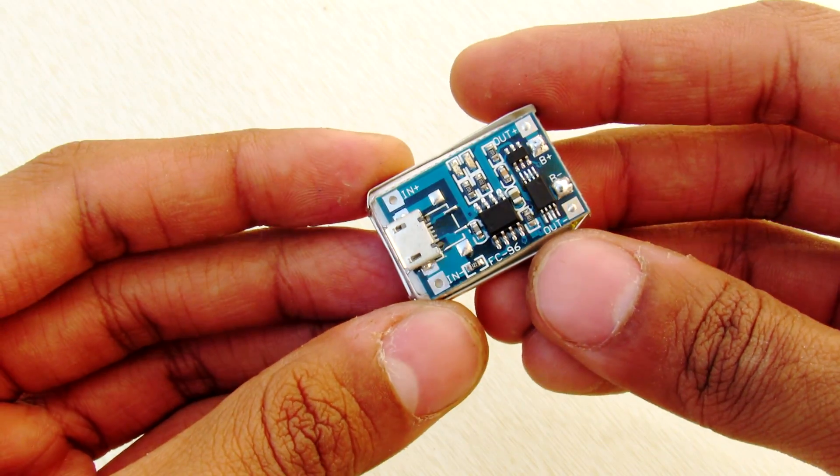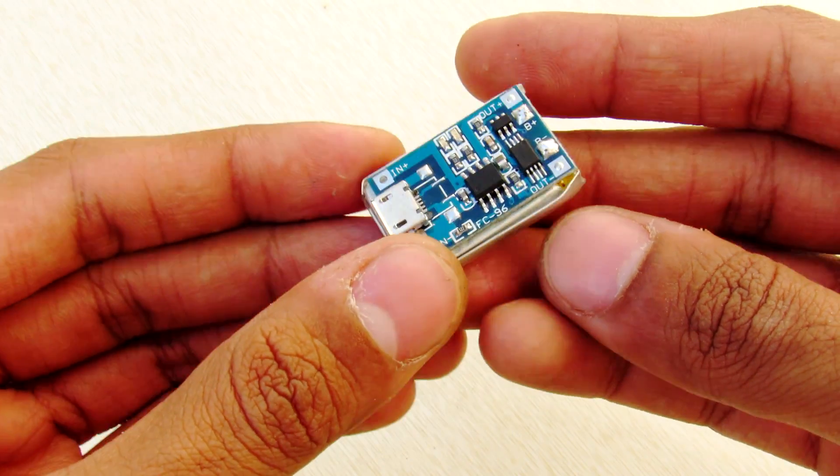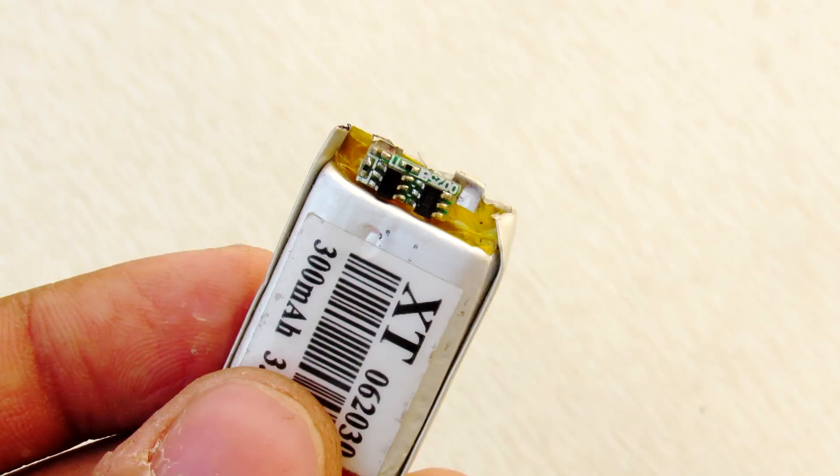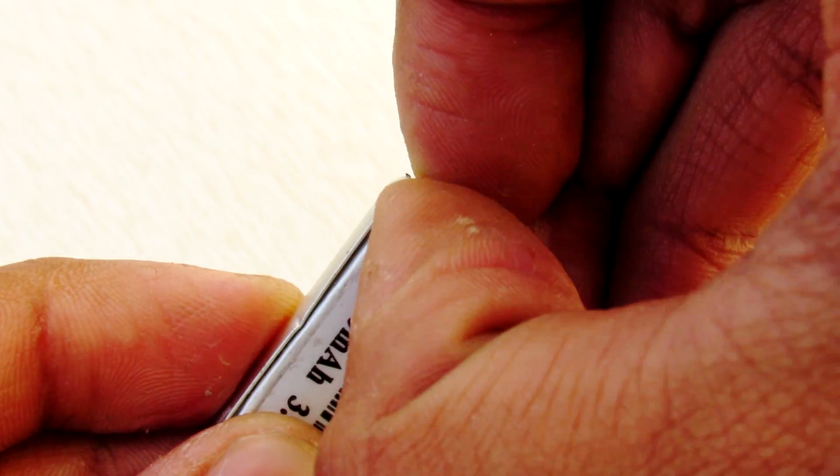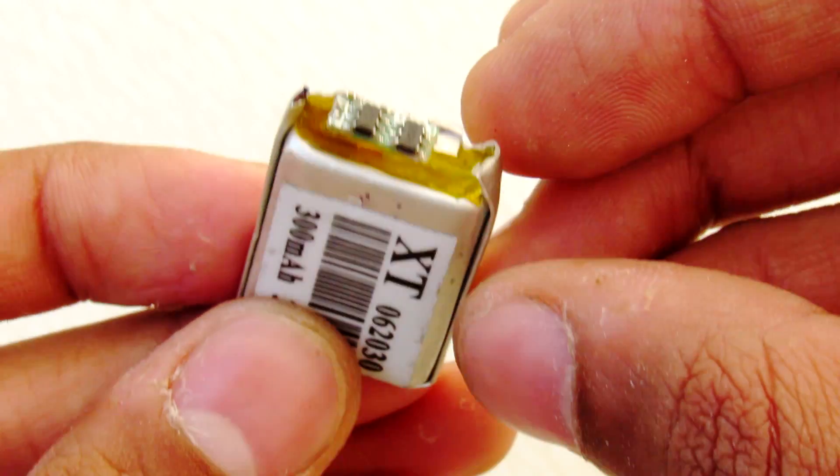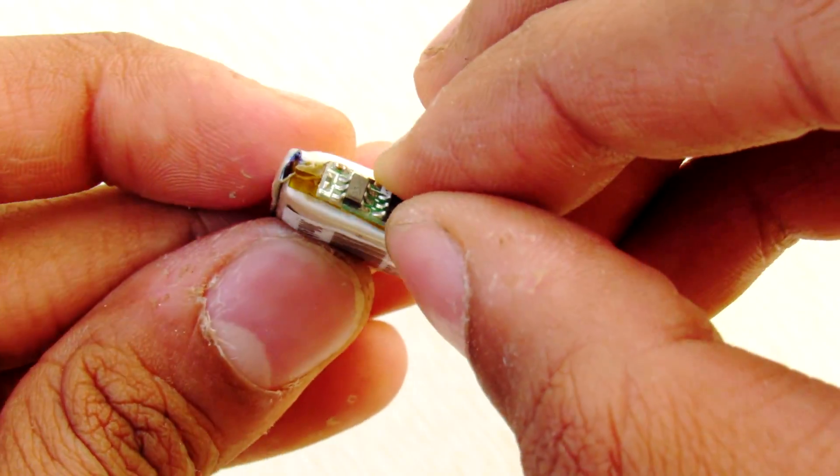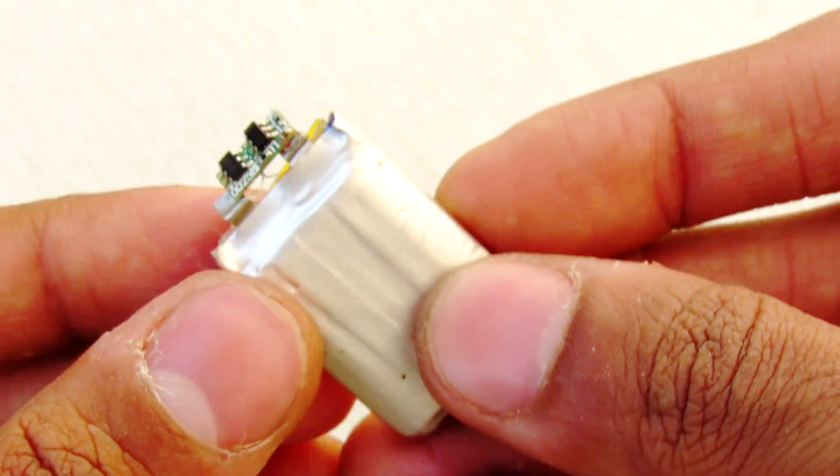Then connect this micro USB charging board directly to the battery. This charging circuit is very intelligent because it automatically cuts off when the battery is fully charged or fully discharged, so you don't have to worry about anything.